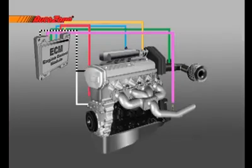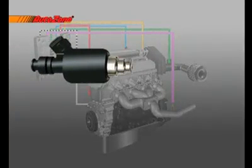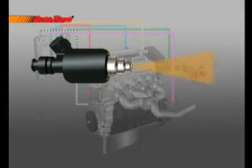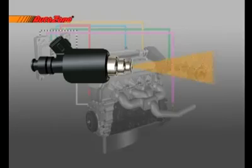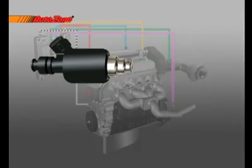Now let's talk about the outputs of the system. First are the fuel injectors. The computer controls the injectors by opening and closing them hundreds of times per minute. The amount of time the injector is open is called the pulse width. The computer increases the amount of fuel entering the engine by extending the pulse width, holding the fuel injector open for a slightly longer period of time, and lowers the amount of fuel by decreasing the pulse width.